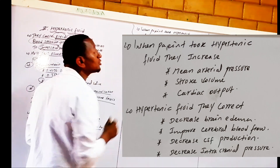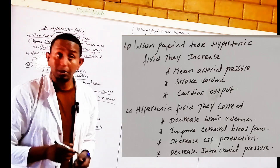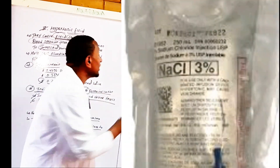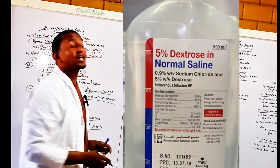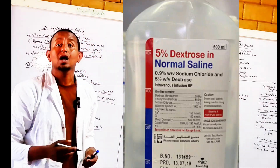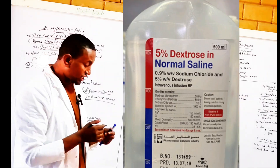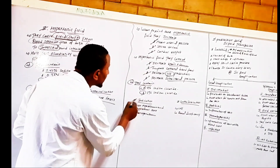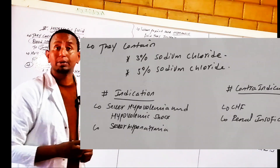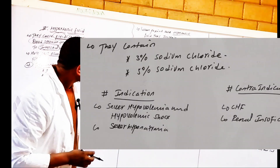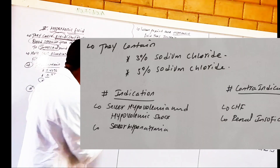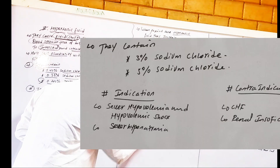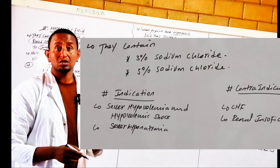Hypertonic fluids contain 3% sodium chloride and 5% sodium chloride. What are the indications and contraindications of hypertonic fluid? Hypertonic fluid is indicated for severe hypovolemia and hypovolemic shock that cannot be treated with isotonic or hypotonic fluid alone.